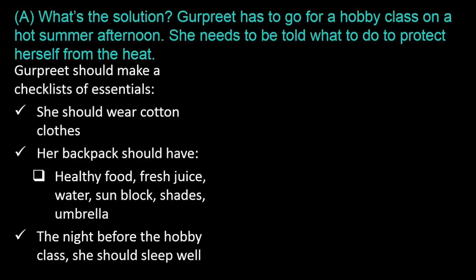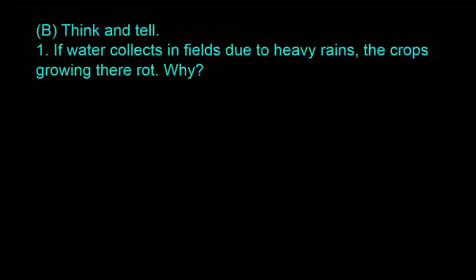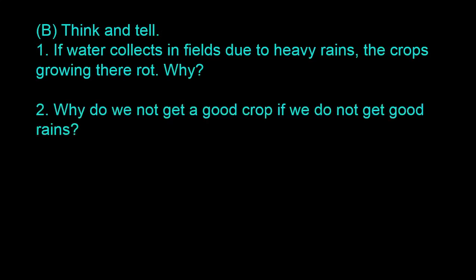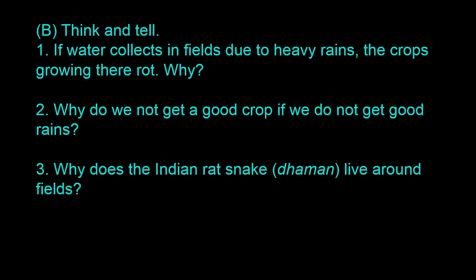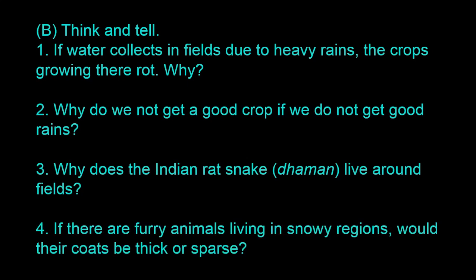Let's see the next question. Question Number B, Think and Tell. 1. If water collects in fields due to heavy rains, the crops growing there rot — why? 2. Why do we not get a good crop if we do not get good rains? 3. Why does the Indian rat snake, damon, live around fields? 4. If there are furry animals living in snowy regions, would their coats be thick or sparse? Let's see the answers.